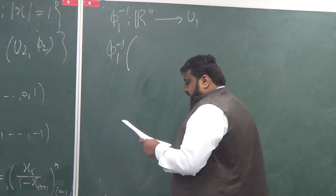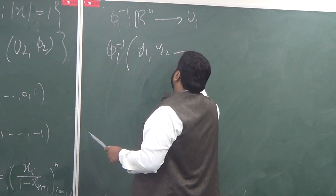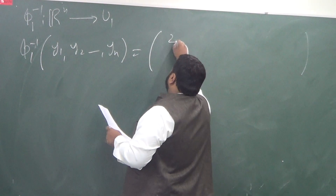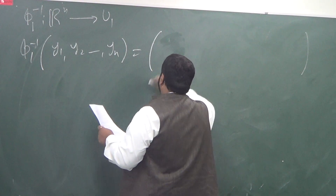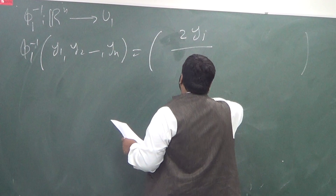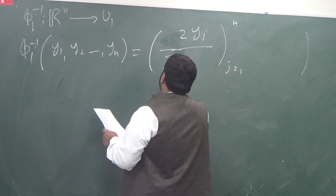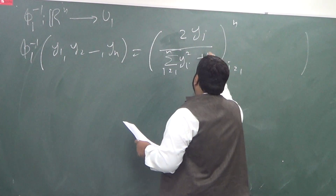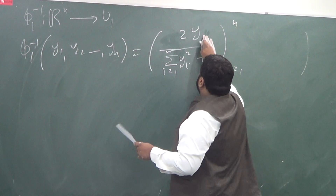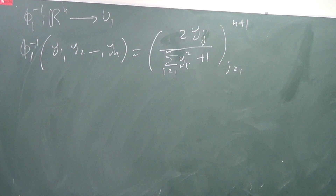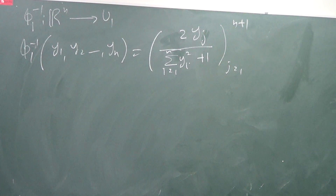φ1 inverse of (y1, y2, ..., yn) is equal to: for j from 1 to n, the j-th component is y_j / (Σ_{i=1}^{n} y_i² + 1), and the (n+1)-th component is given accordingly. I can get into the details of how this came, but that would be unnecessary for now. If you wish, we can go to the tutorial and see why these maps are there. I am telling you a way to project U1 into R^n — this is the map.